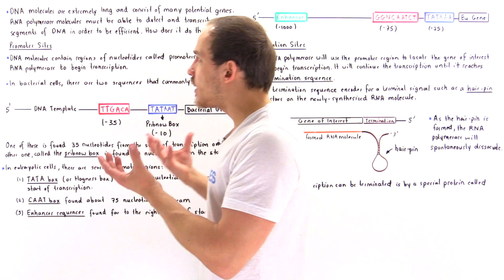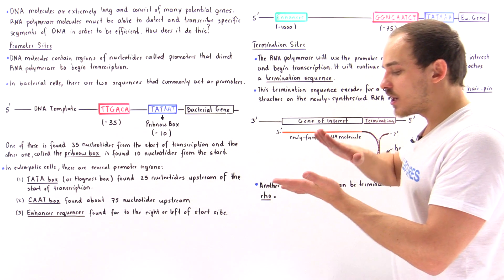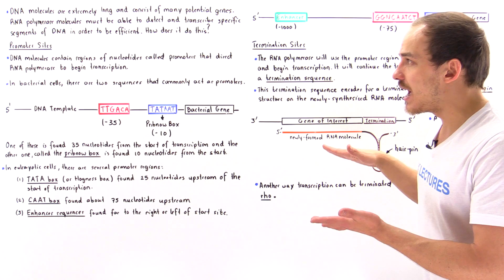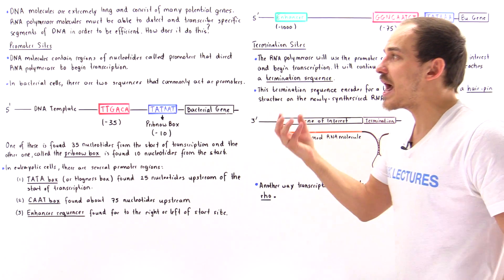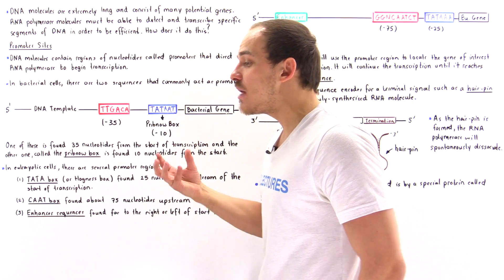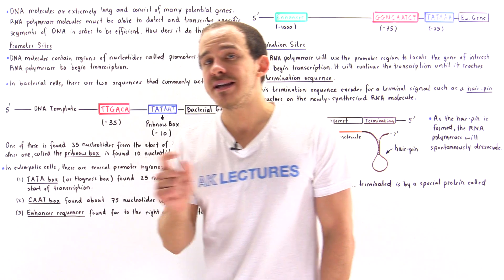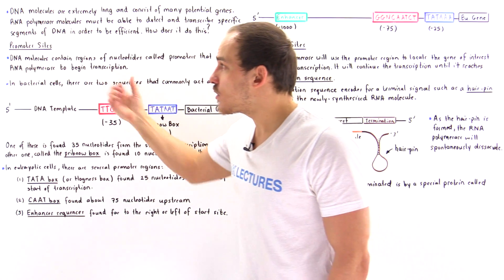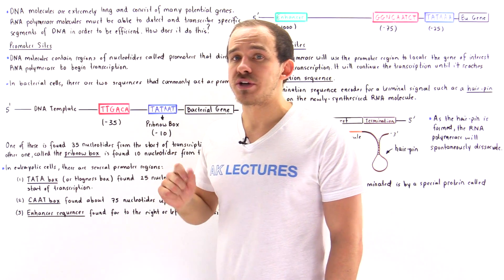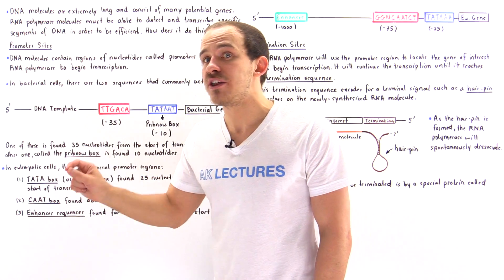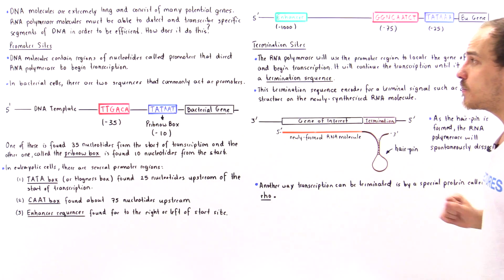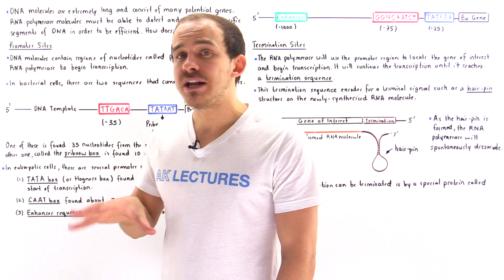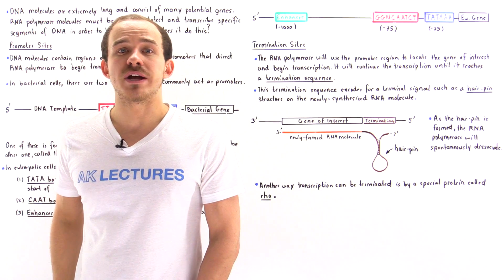The important takeaway from this lecture is that there are promoter sites and termination sites that work with RNA polymerase to transcribe the gene of interest. The promoter sites allow RNA polymerase to locate and detect where the gene is, and the termination sites allow RNA polymerase to end the process of transcription.